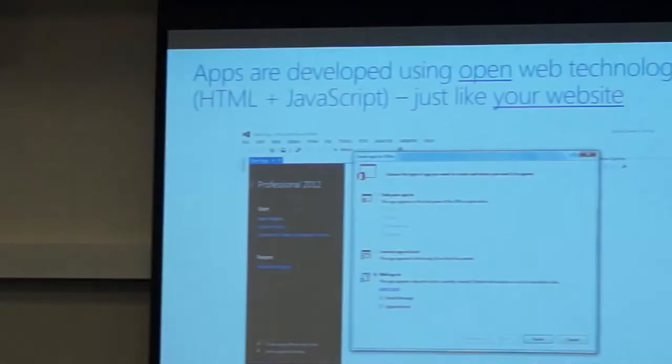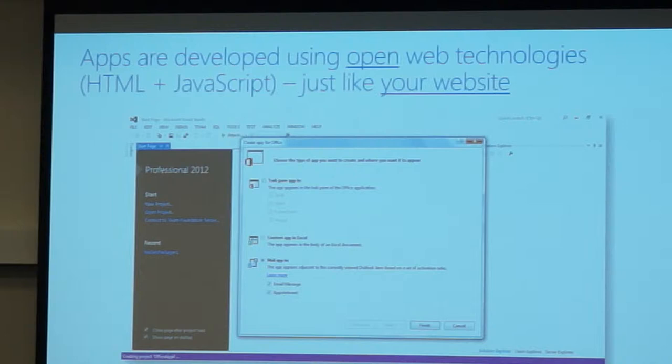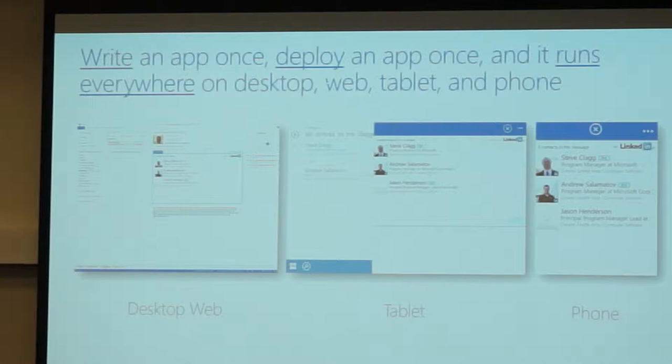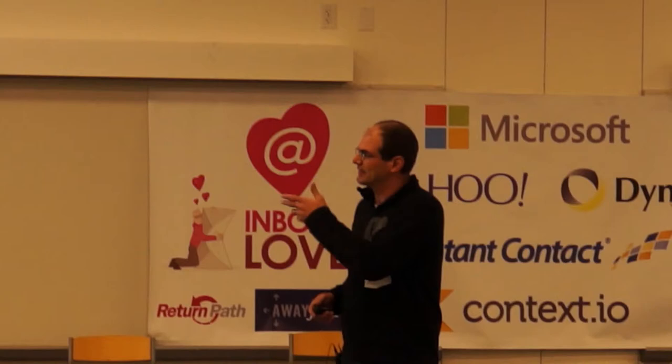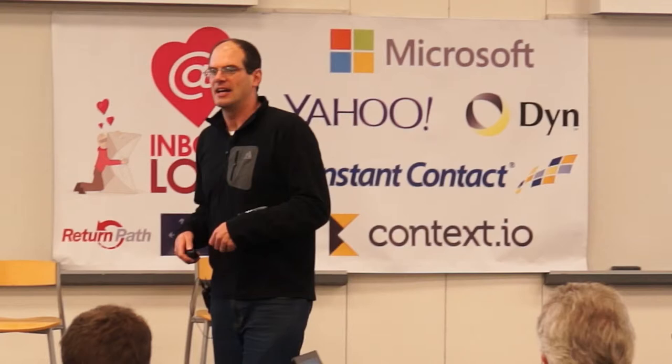If you're a web developer and you've got a website, within a very short amount of time you can get an app going within our framework. We really wanted to shoot for this idea of a write-once, run-everywhere model. To us, everywhere has got to be desktop, it's got to be web, it's got to be phone, and it's got to be tablet. This model actually achieves that today where the same app can run in Desktop Outlook, in the Outlook Web App client, and it also runs in the OWA for iPhone and OWA for iPad apps that we just released the last couple of months.